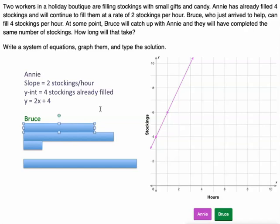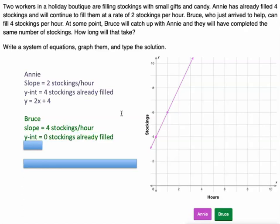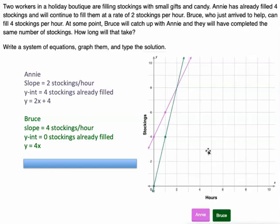All right, now what about Bruce? Bruce, he is working at a rate of four stockings per hour, so that's his slope. But his y-intercept is 0. So the equation there is going to be y equals 4X. So our system of equations are these two equations. When we graph that, it's going to have a y-intercept of 0 and a slope of 4. So y-intercept of 0, slope of 4 means up 1, 2, 3, 4 over 1. So the question that we're being asked is how long will it take? How many hours will it take?